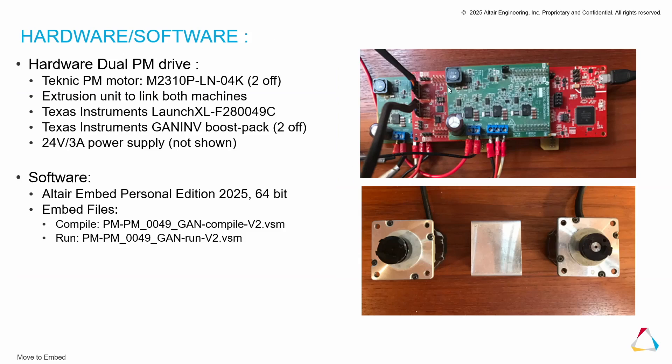The first stage is to look at the requirements, the hardware and software. What you see here is the board and the two motors, and they're connected by an extrusion unit. The software, as I said, is personal edition embed, and we have two files: the compile file and the run file.